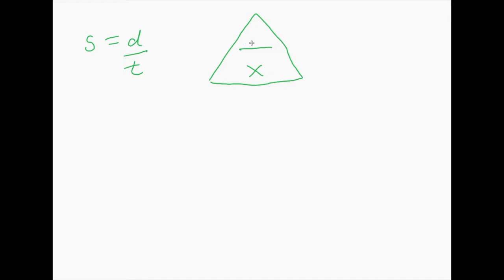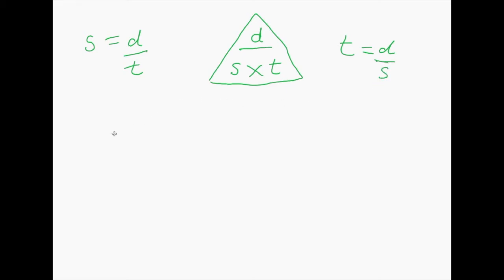I've got three things and each one can go in a corner. The formula is given to you in the form of something equals something, so it goes on the top shelf. I've got two spaces and two things — shove those things in those spaces. Then you literally cover up what you're looking for and what you're left with is how to work it out. If I'm looking for t, cover up t — I'm left with distance divided by speed. So time equals distance divided by speed.